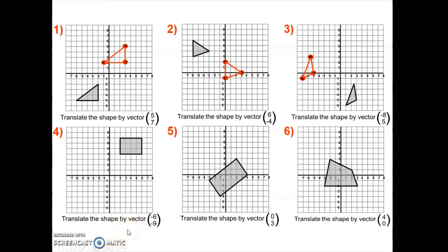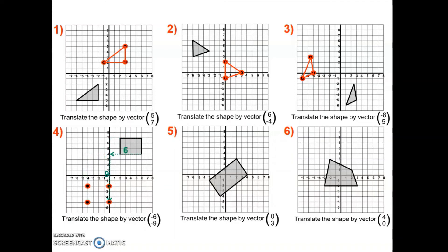For question four, we are going to move each point on the rectangle six to the left because of this negative and nine down because of this negative. Six to the left and nine down for each of the four points on the rectangle — six to the left, nine down, six to the left, nine down — and there is my image once I draw it in.